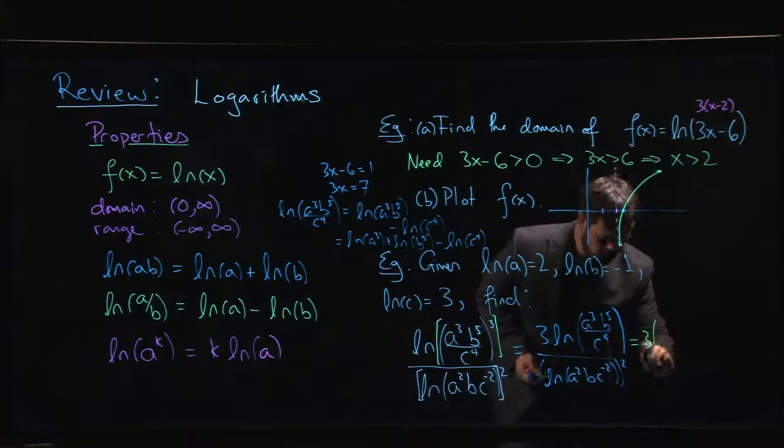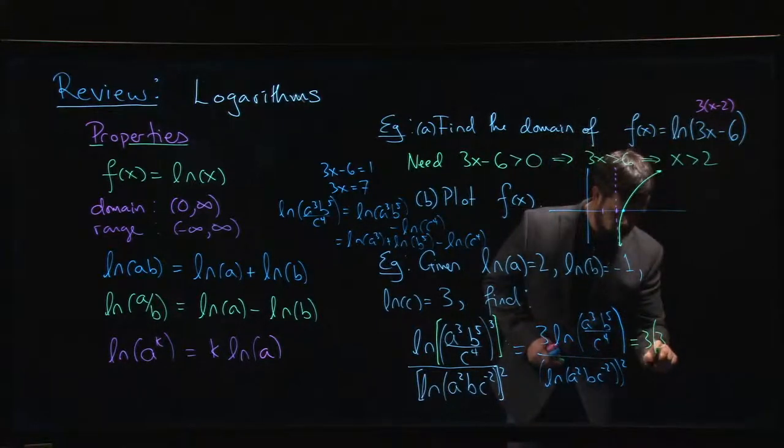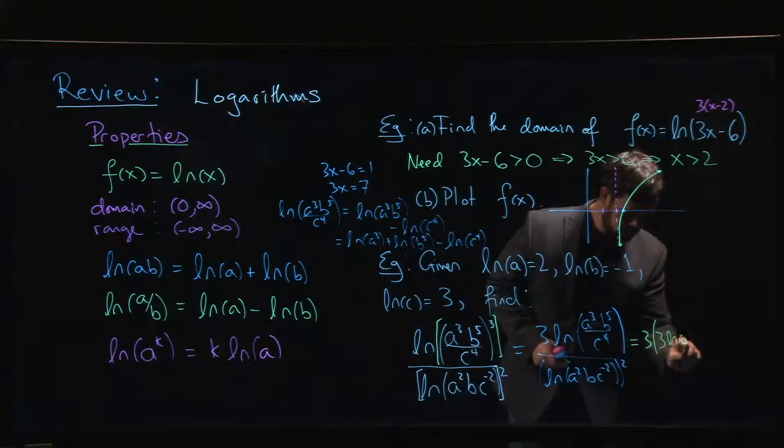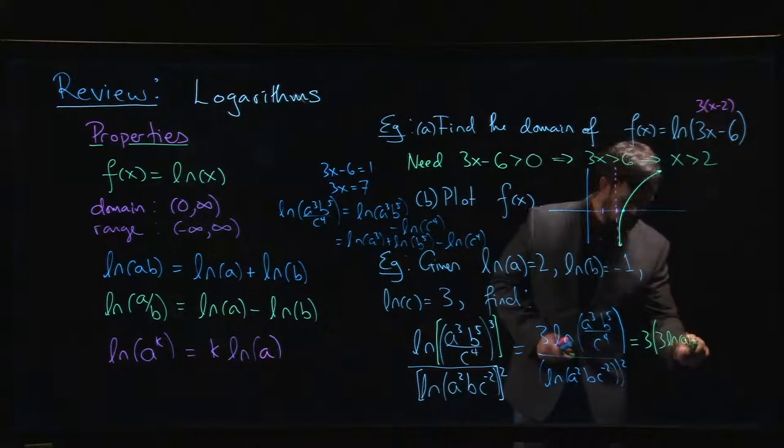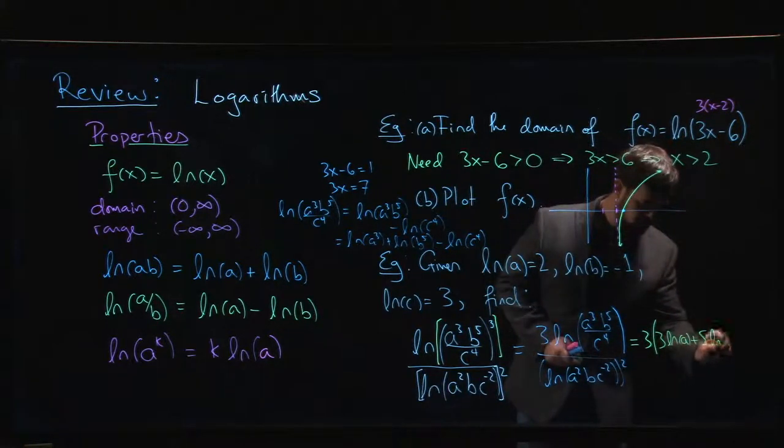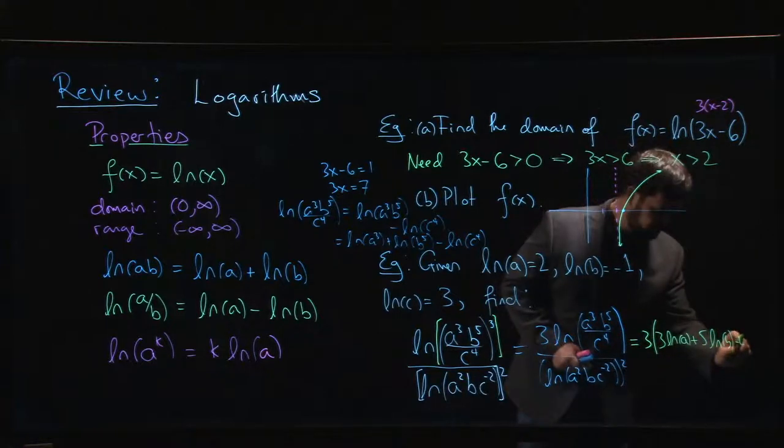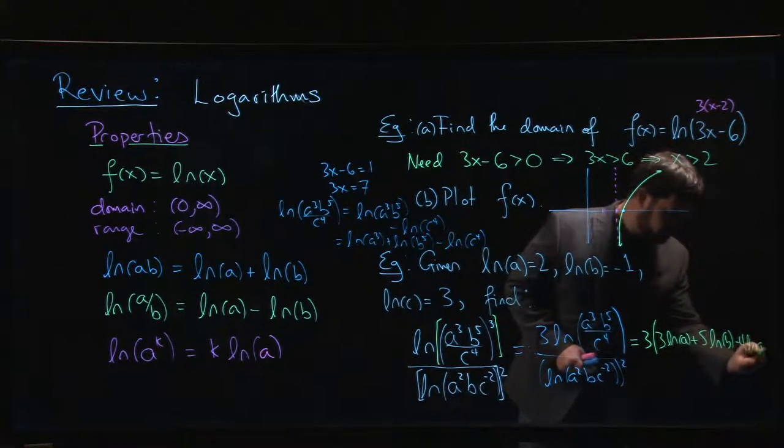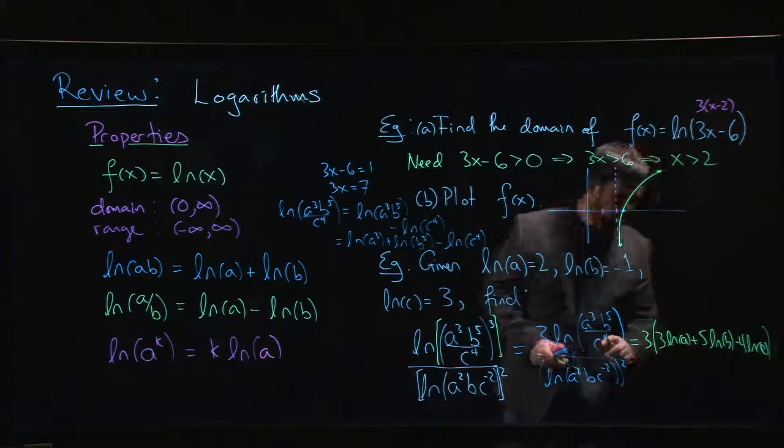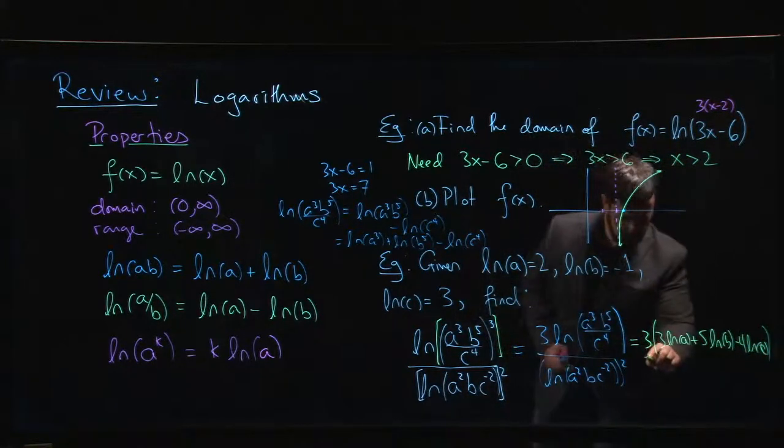And then finally, you can bring the powers down. So what you're going to have is you saw that three out front, you're going to have three log a plus five log b minus four log c.